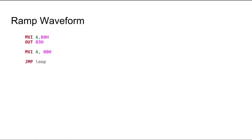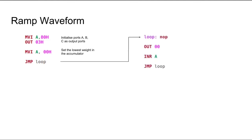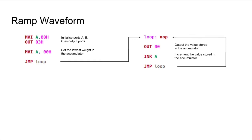Now, moving on with the ramp waveform. First, we would be initializing the ports. The initialization is simply similar to that of the previous program. Then, we would be setting the lowest value on the accumulator. This program contains only one subroutine, which I have named subroutine loop. We would be outputting the value of the accumulator that we just set. Then, we would be incrementing the value and we would jump back to loop, thus outputting the next value. We will keep incrementing the value of A and jumping back to the loop, outputting the value.